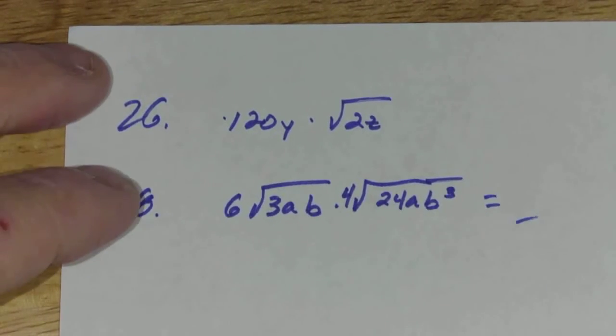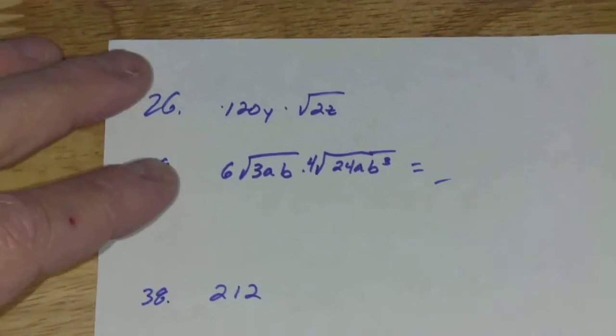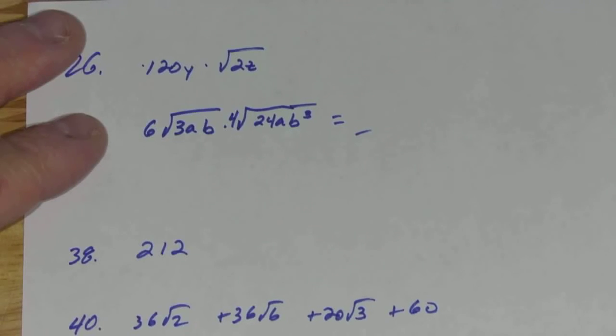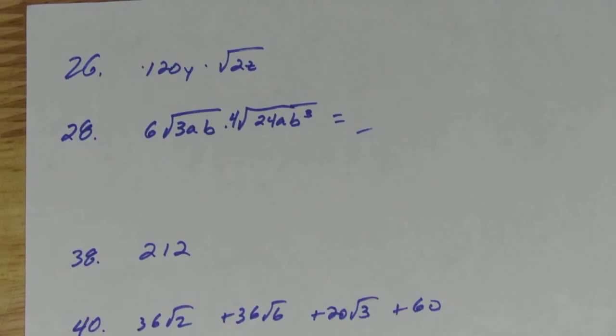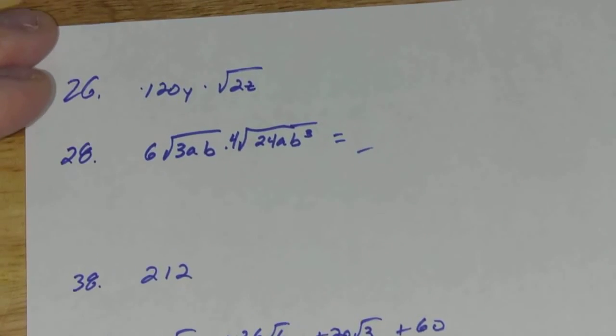Okay, so the answer to 26, you can see right there, 120Y, square root of 2Z. 28. I had somebody ask a question to do 28. This 4 is not a 4th root. This 4 is not a 4th root. That's actually a multiplier outside.